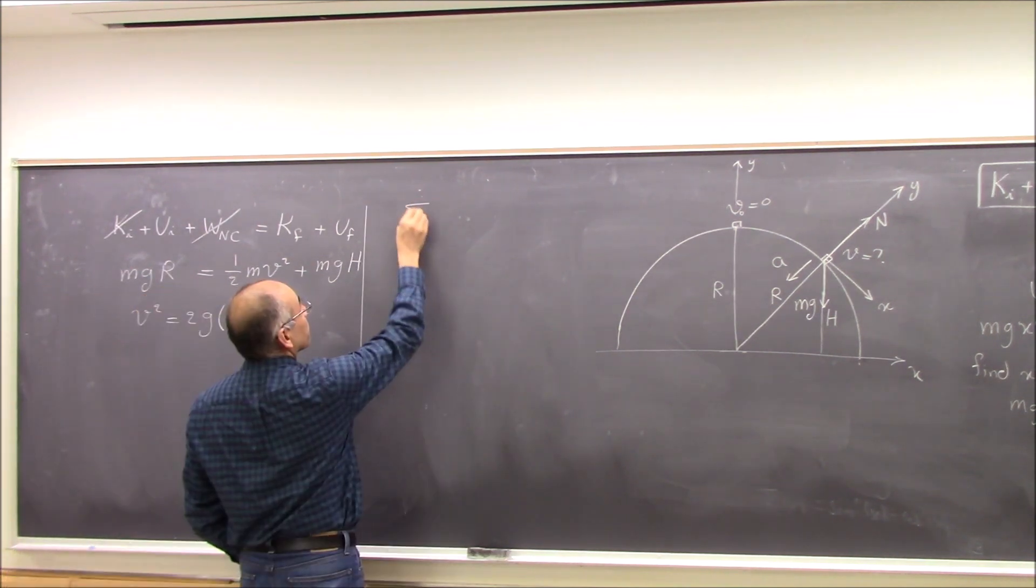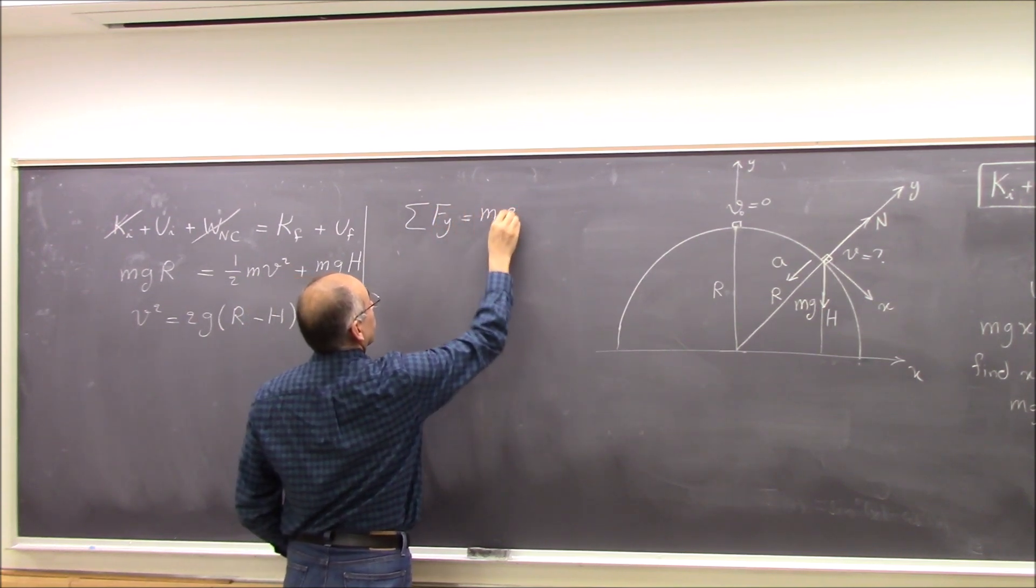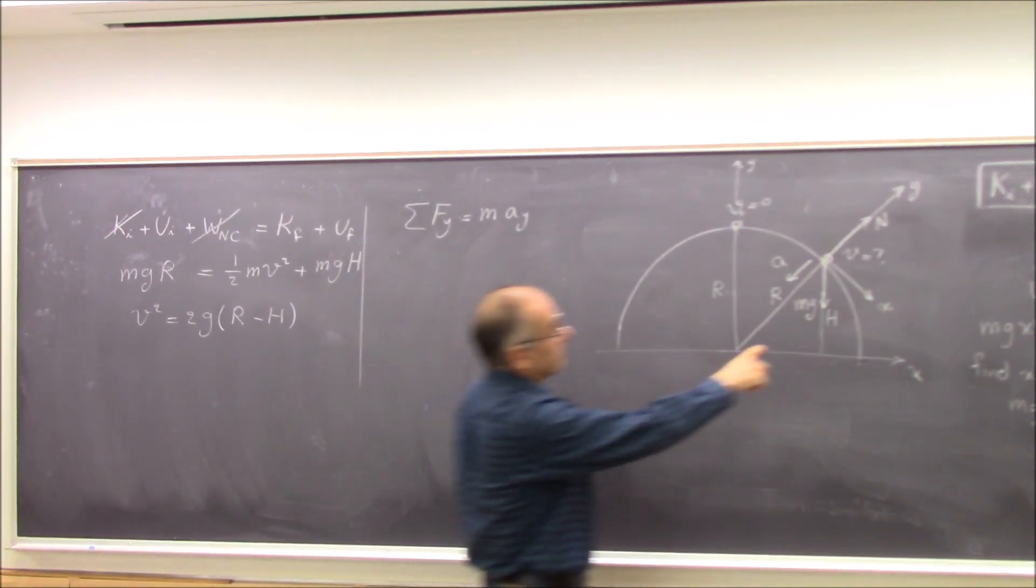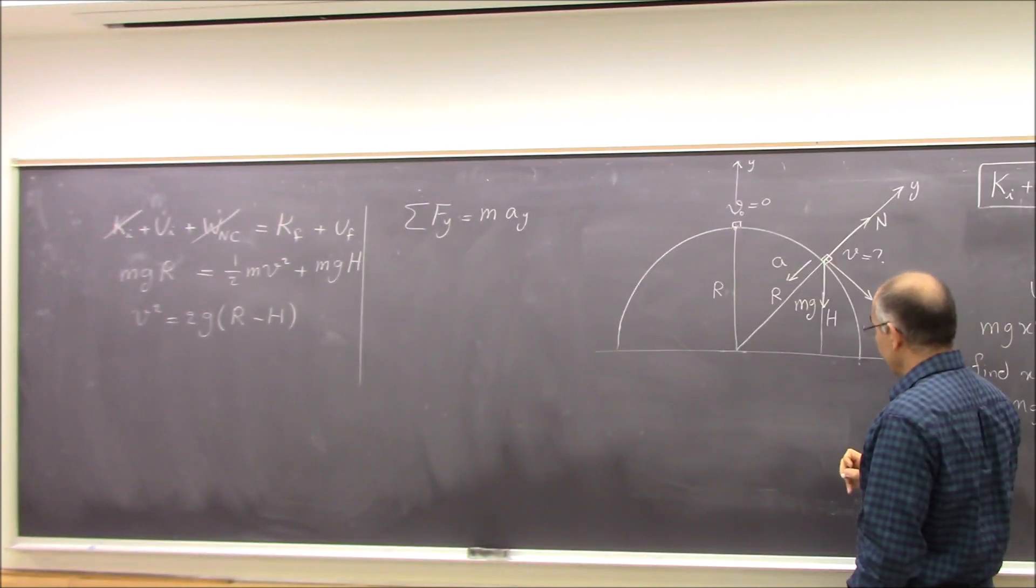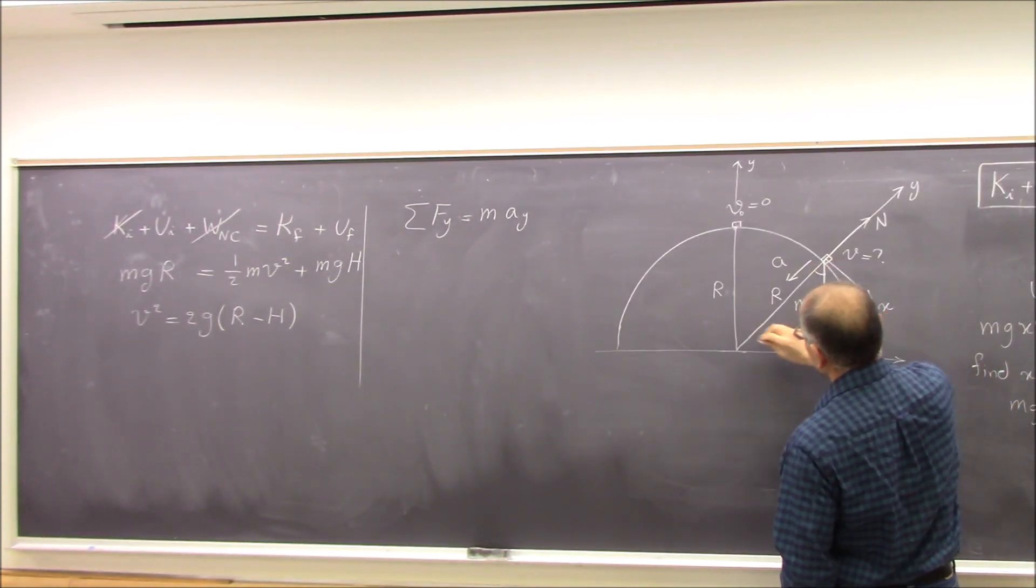So if I apply sum of Fy equal to M Ay, what do I get? In that coordinate system of X and Y. N minus Mg cosine theta equals... Yeah, if this angle is theta, which is the same as this angle.